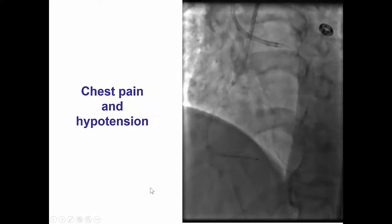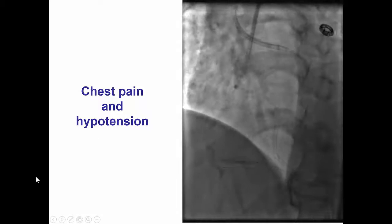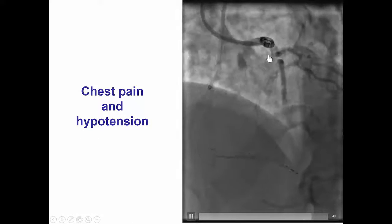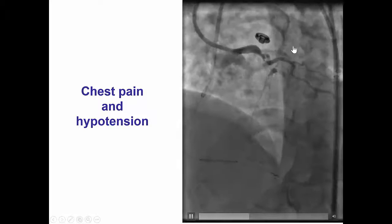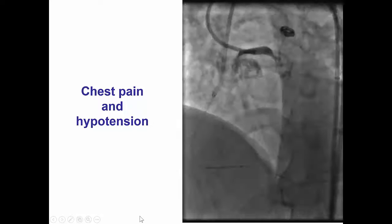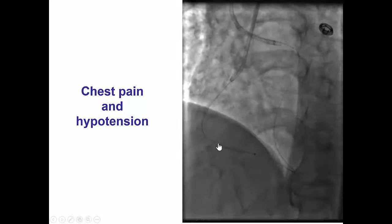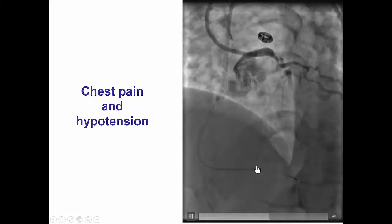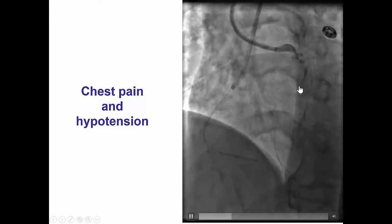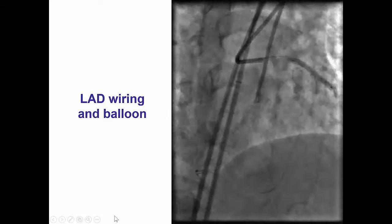However, while this was happening, the patient suddenly developed chest pain and hypotension. An injection on the left system revealed a very feared dissection in the proximal LAD. This is an emergency — it happened while we were about to stent the distal right coronary artery — so we obviously needed to re-canalize this vessel before the patient spiraled down.